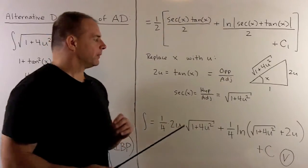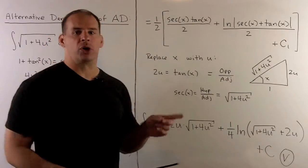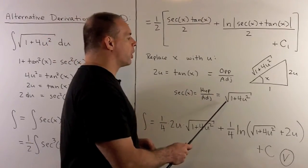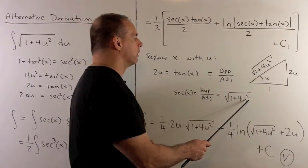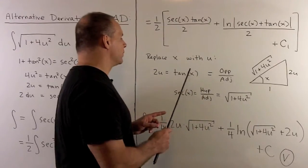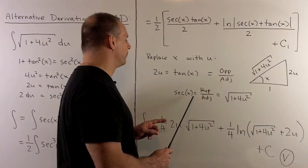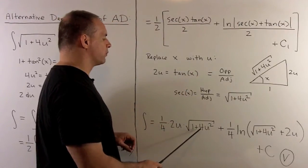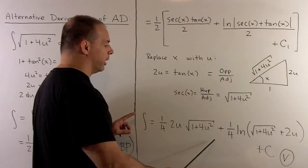The secant of x, that's 1 over cosine, so I have hypotenuse over adjacent, which gives me square root of 1 plus 4u squared. Now, we can just substitute in for tanx and secant x. Secant x tanx over 2, that's just 2u square root of 1 plus 4u squared. That looks familiar.